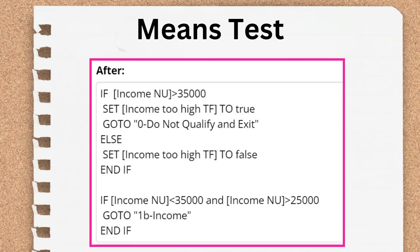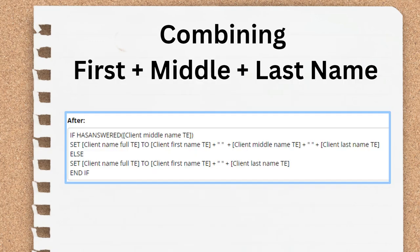Another popular example is combining first plus middle plus last name into a full name variable. The twist comes when you include the has answered function to test for the middle name. That way your final variable won't have an odd extra space or an undefined variable warning if the user doesn't include or doesn't have a middle name. The way to do this is to set a variable like client name full TE to first plus space plus last.